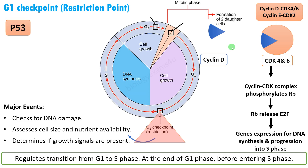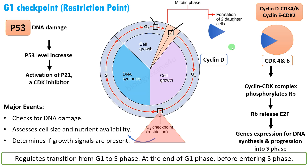Now the regulation of the G1 checkpoint is primarily by the p53 protein. Once there is DNA damage, p53 levels rise and that activates transcription of the p21 gene and production of the p21 protein, which is a CDK inhibitor. This inhibits CDK, thus halting the cell cycle and preventing progression from G1 to S phase.